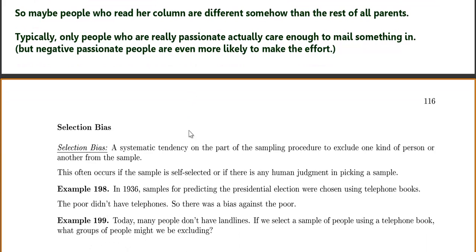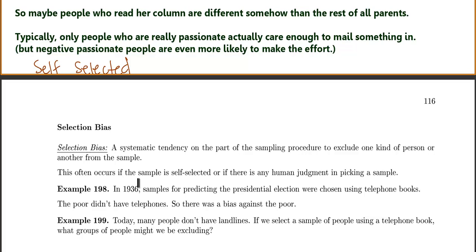Selection bias is any systematic tendency on the part of a sampling procedure to exclude one kind of person or another from the sample. This often occurs if the sample is self-selected, meaning the people involved decide if they want to actually respond or not. Selection bias also arises from any human judgment in picking the sample. For example, in 1936, samples predicting the presidential election were chosen using telephone books, and the poor didn't have telephones, so there was a bias against the poor.